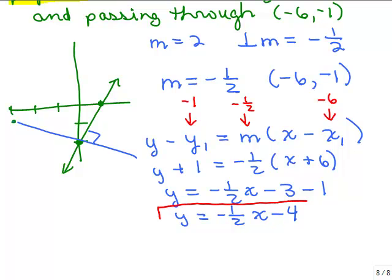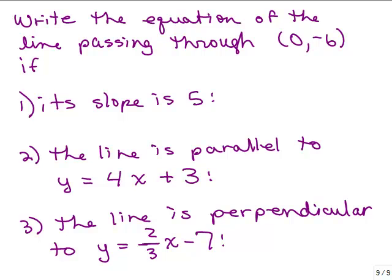Here are three problems that should be quick and easy. Write the equation of a line passing through 0, negative 6 — hint: that's the y-intercept — for three conditions: if the slope is 5; if it's parallel to y equals 4x plus 3; and if it's perpendicular to y equals 2 thirds x minus 7. See if you can write each equation, all going through the ordered pair 0, negative 6.